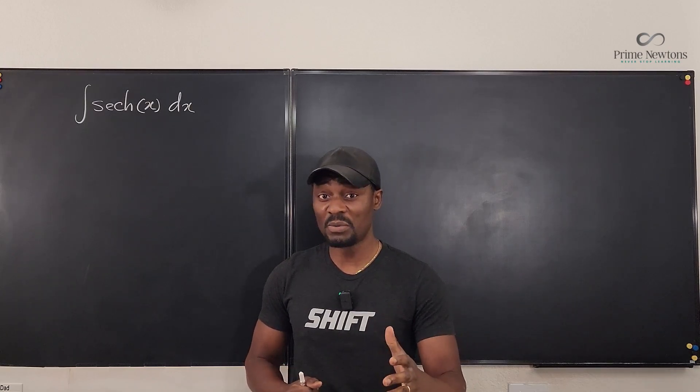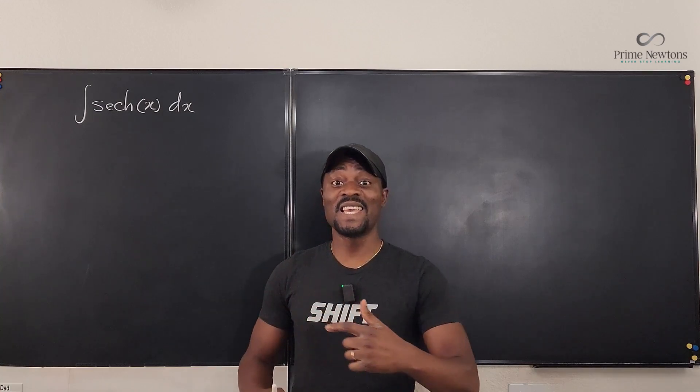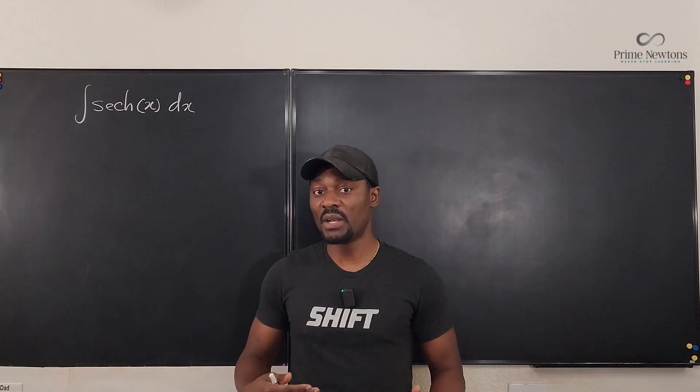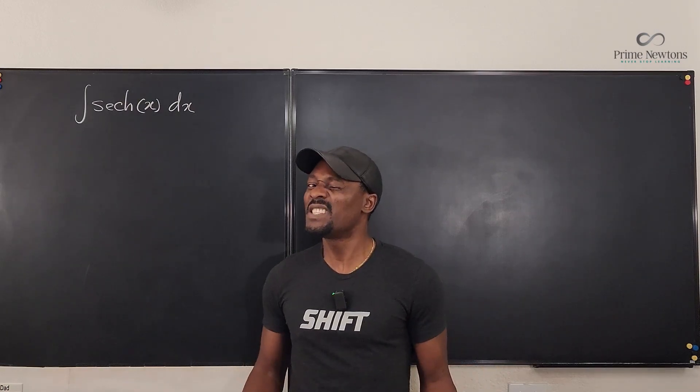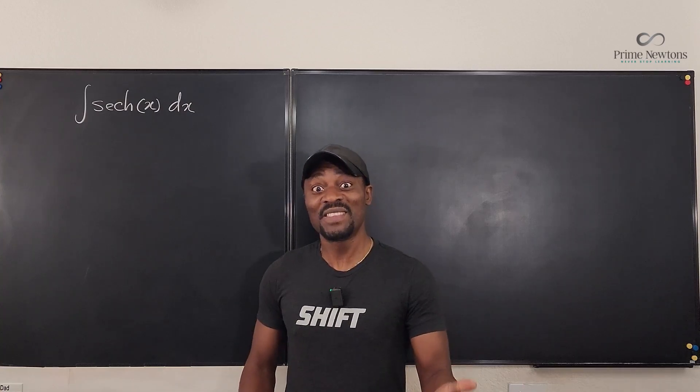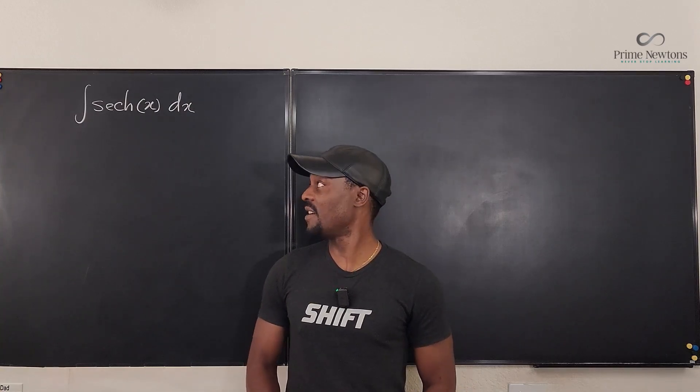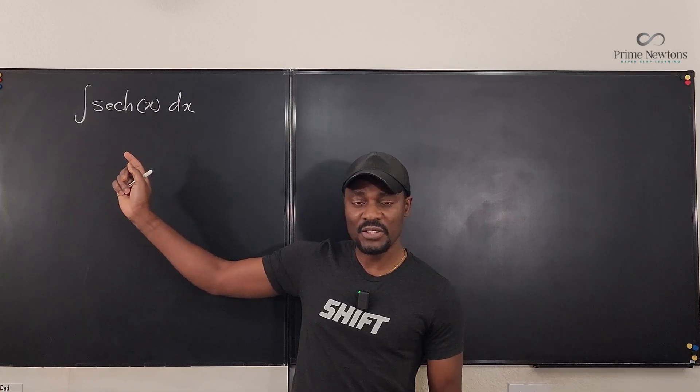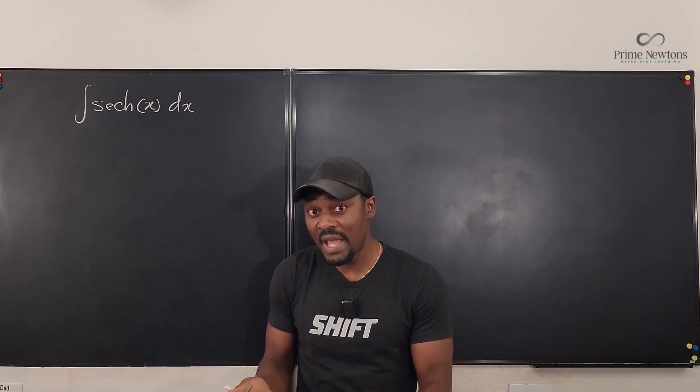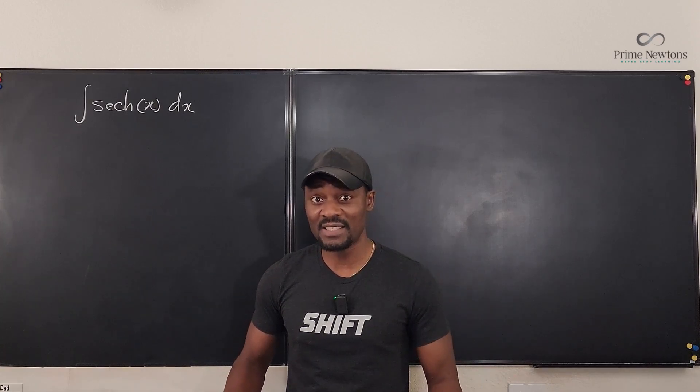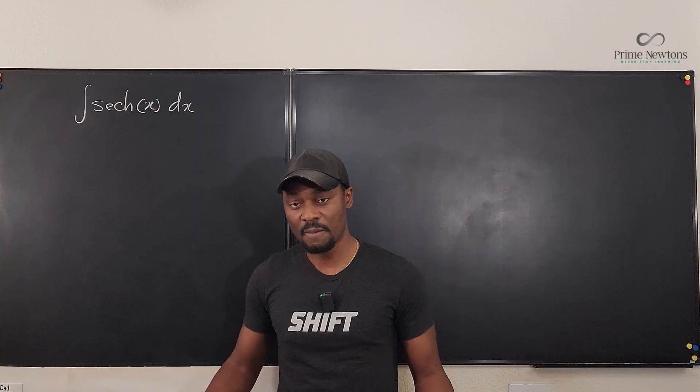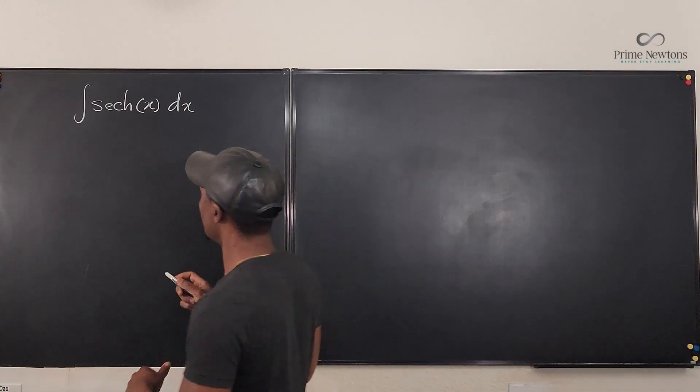The biggest problem with this problem is if you don't know the definition of hyperbolic secant, which I call sech. I know many people don't like that, but that's what I call it. What is the definition of hyperbolic secant? Because if you don't know that, you try to use some weird identities and you're going to get stuck. Or maybe your answer gets more complicated. So hyperbolic secant is this.